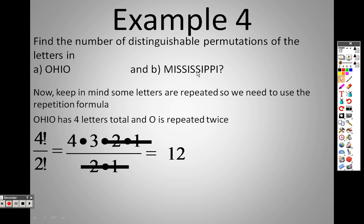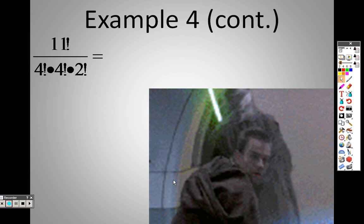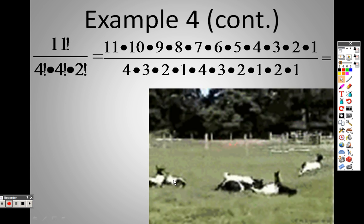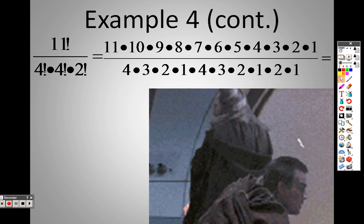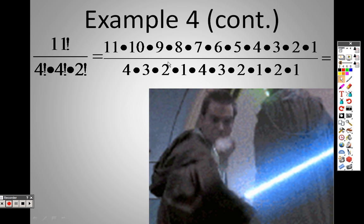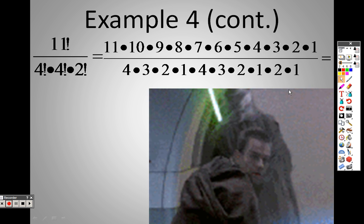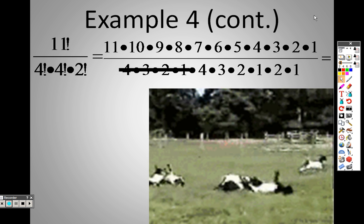For Mississippi, there are eleven total letters. I shows up four times, S shows up four times, P shows up two times. So when I write this whole thing out, it is 11! over 4!×4!×2!. That's eleven times ten times nine the whole way down, then 4×3×2×1, then 4×3×2×1 again, and then 2×1.